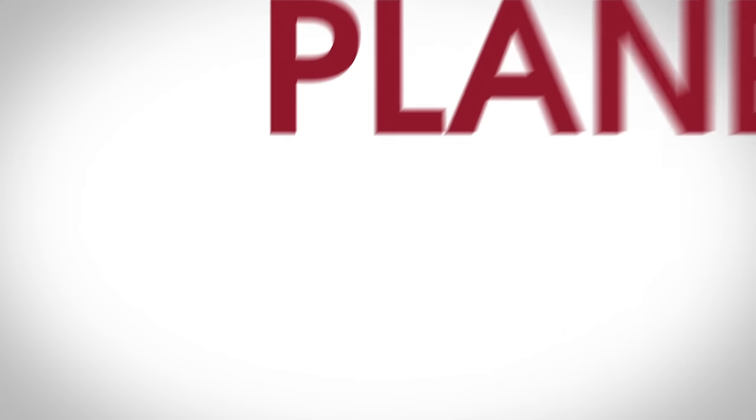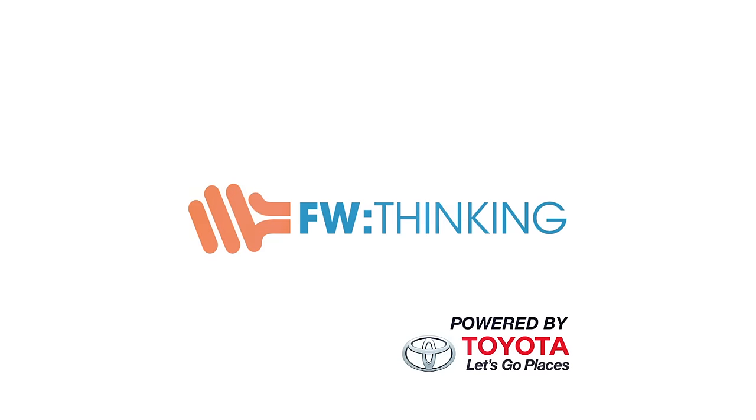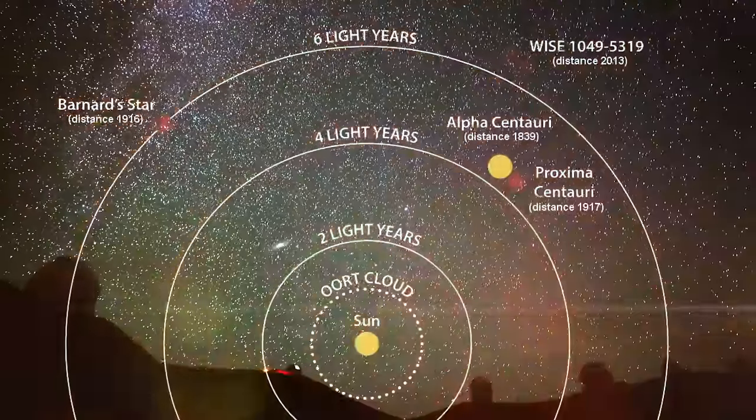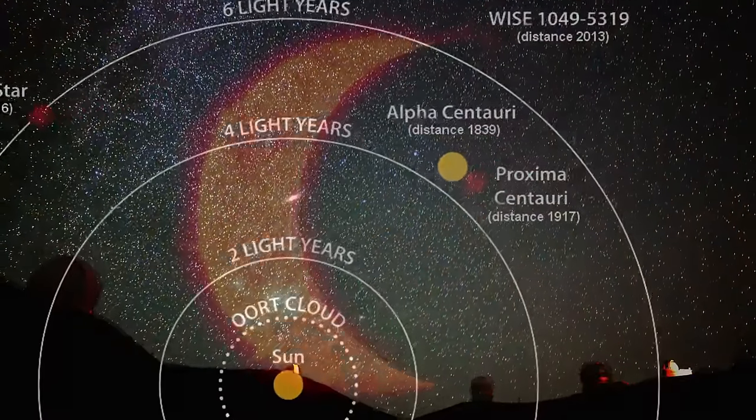The closest Earth-like planet is right next door. In August 2016, scientists at the European Southern Observatory had huge news. They had discovered a planet in orbit around Proxima Centauri.